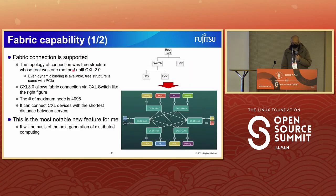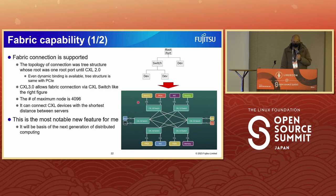The first notable feature is fabric capability. Fabric connection is now supported. The topology was a tree structure rooted at one root port until CXL 2.0 — the same tree structure as PCI Express. CXL 3.0 allows fabric connection via CXL switch as shown in the figure on the right. The maximum number of nodes is 4,096. It can connect CXL devices with the shortest distance between servers. This is the most notable new feature — it will be the basis of the next generation of distributed computing.